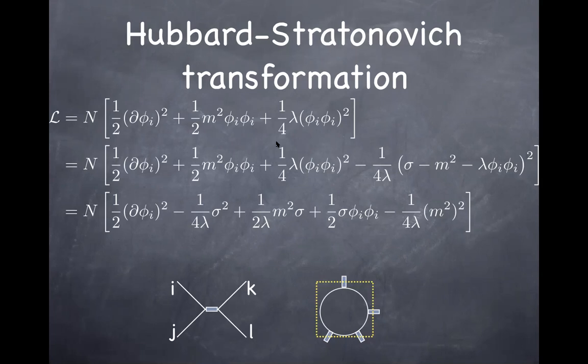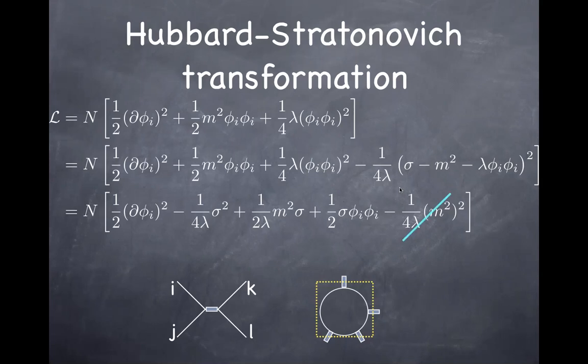After integrating out phi, you end up with a non-linear theory for sigma. The large-N limit makes it exactly solvable in the sense that all the order-N diagrams are included in the 1PI effective action, and the large-N limit is the same as the small-ℏ limit at this stage. So we can identify the correct ground state just by looking at the stationary condition of the full action in square brackets.